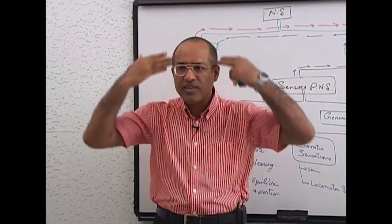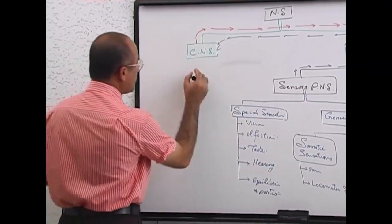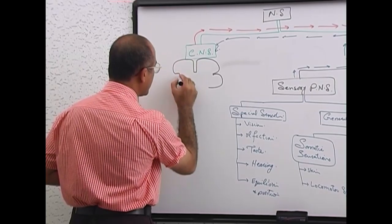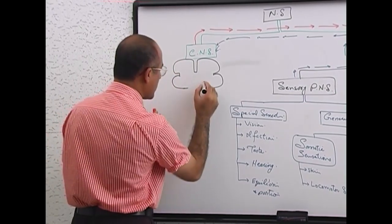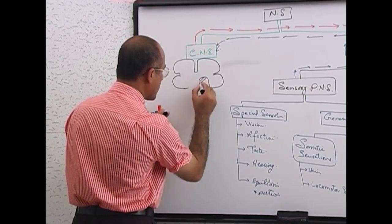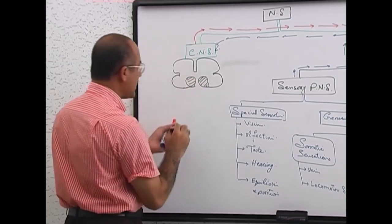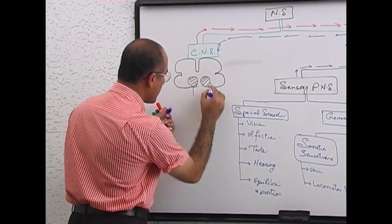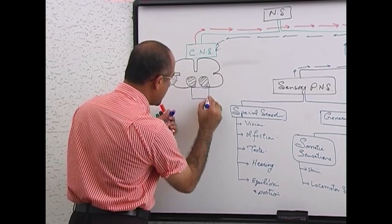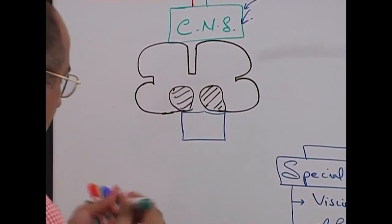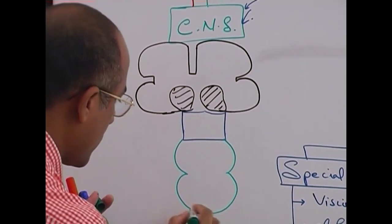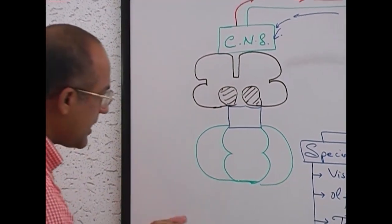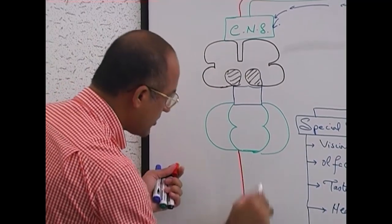If I am standing like this and you make a section of the brain, here is the forebrain, here is the midbrain, here are these structures, and here is the hindbrain. This structure here is the spinal cord.